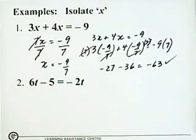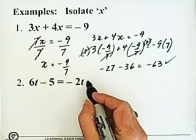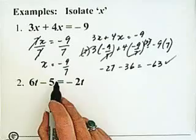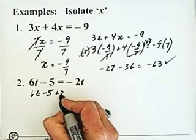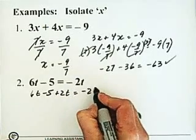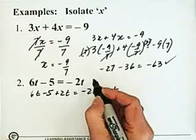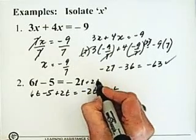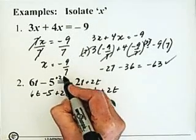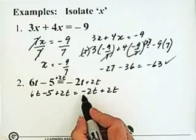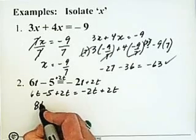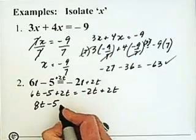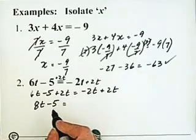Now here we have 6t minus 5 equals minus 2t. We need to get our t's together. So I am going to add 2t to the right side and add it to the left side. So I have 6t minus 5 plus 2t equals minus 2t plus 2t. I'm adding the 2t on the right-hand side and adding the 2t on the left-hand side.